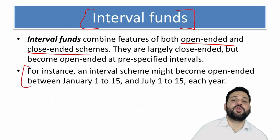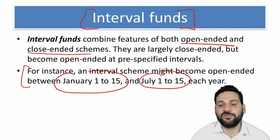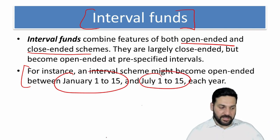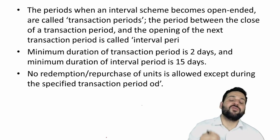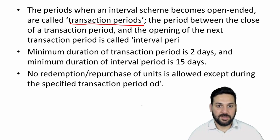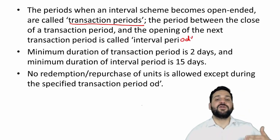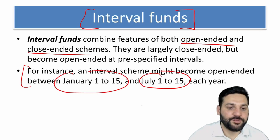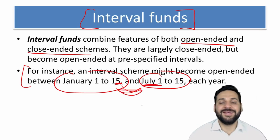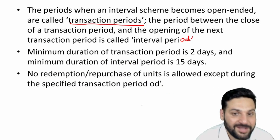For example, in an interval scheme with a maturity of one or two years, you can redeem your units from January 1st to 15th and July 1st to 15th — twice a year. The period when you can transact is the transaction period. The period between two transaction periods is the interval period. For example, January 15th to July 1st is the interval period.